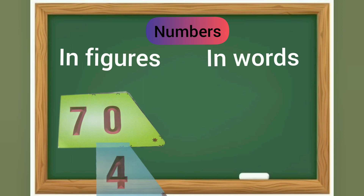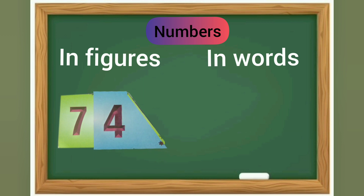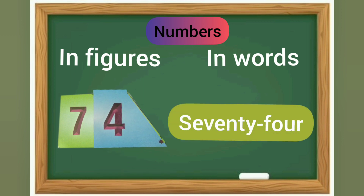70 and 4 is 74. In words it is S-E-V-E-N-T-Y F-O-U-R, seventy-four.